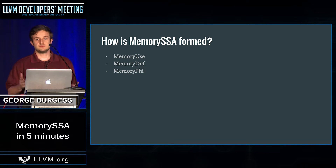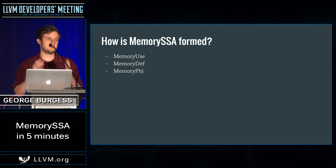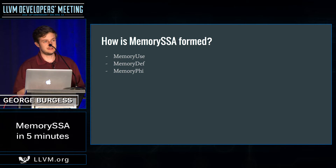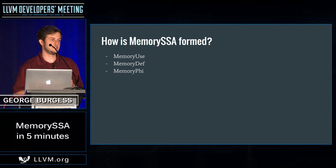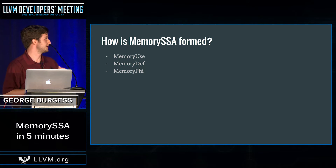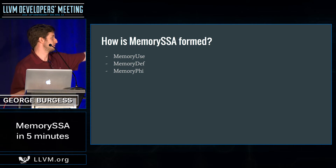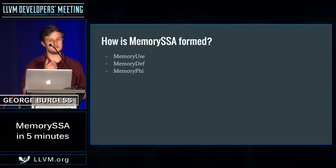So how does it work? Essentially, you pass Memory SSA a function, it thinks about it, it builds up a bit of internal state, it builds up its internal representation, which is composed of uses, defs, and phis.